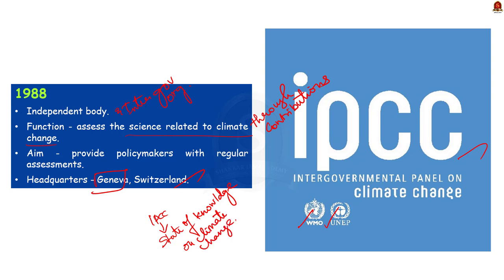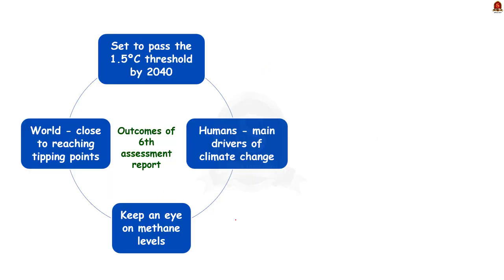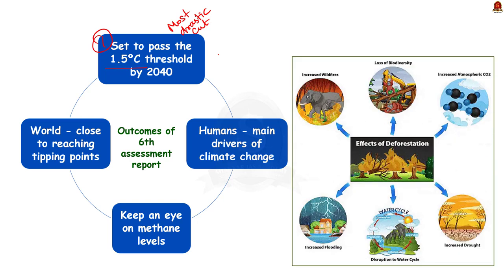IPCC released its 6th Assessment Report in August 2021. The IPCC report in 2022 warned that the world is set to reach the 1.5 degree Celsius level within the next two decades and we have to make the most drastic cuts in carbon emissions from now onwards. If such a thing does not happen, it can cause severe consequences to food supply, human health, biodiversity loss, and the integrity of the natural environment. The assessment report said we are set to pass the 1.5 degree Celsius threshold by 2040.